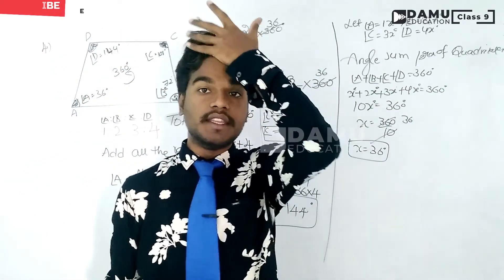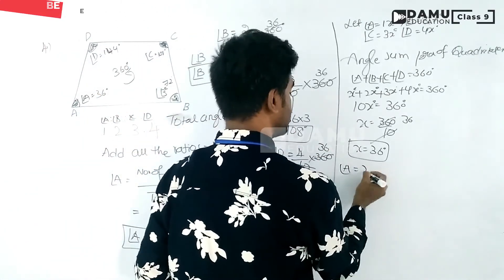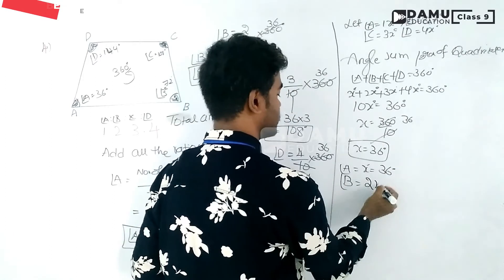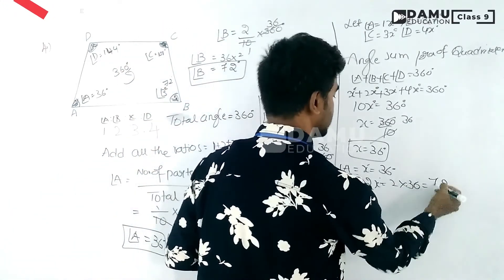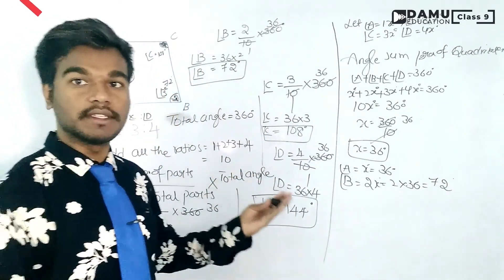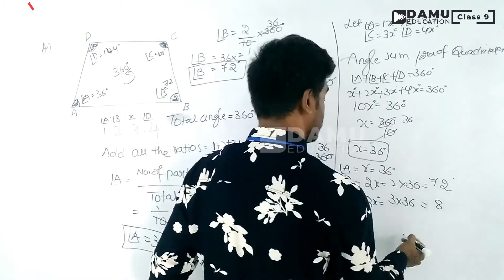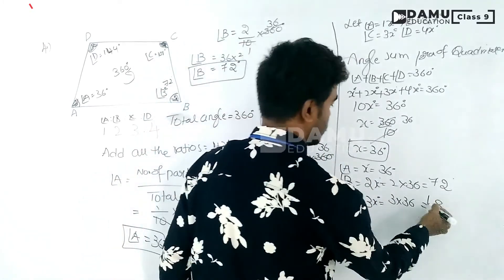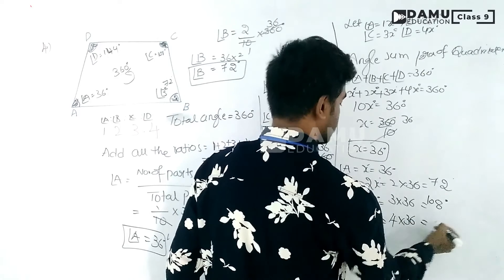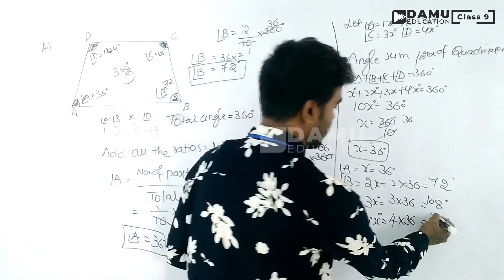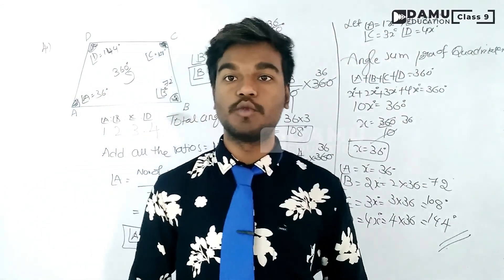Now substituting x equals 36: angle A equals x equals 36 degrees. Angle B equals 2x equals 2 into 36 equals 72 degrees. Angle C equals 3x equals 3 into 36 equals 108 degrees. Angle D equals 4x equals 4 into 36 equals 144 degrees. Both methods give the same result. Thanks for watching, please subscribe.